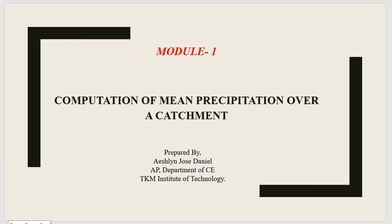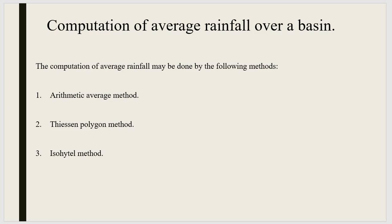Computation of mean precipitation over a catchment. Suppose you have a basin or a catchment area and you need to find the mean precipitation or average rainfall over that basin. The rainfall is measured at a number of rain gauge stations suitably located in that area. In order to find the accurate rainfall, you will need more than one rain gauge station. The number of rain gauge stations depends upon the area and the distribution of rainfall. If a basin contains more than one rain gauge station, the computation of average rainfall may be done by the following methods.